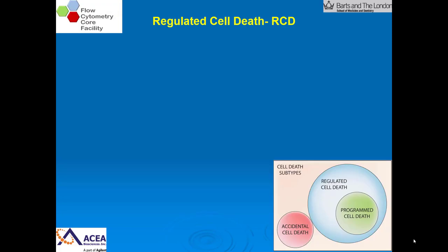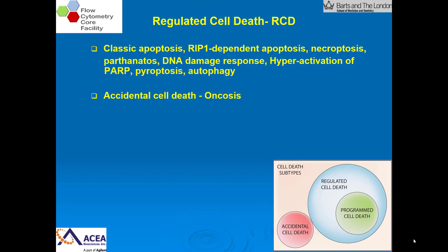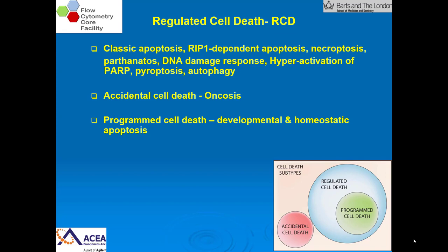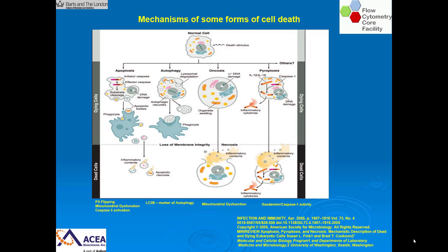Moving to regulated cell death, which we'll be talking about today — you can see in this diagram that accidental cell death sits outside the main classification, while the forms we'll be discussing include regulated cell death and programmed cell death, which encompasses apoptosis, non-apoptotic, and programmed necrosis. There is no room for senescence or ER stress within this reclassification, and notably RIP1-dependent apoptosis is not included.